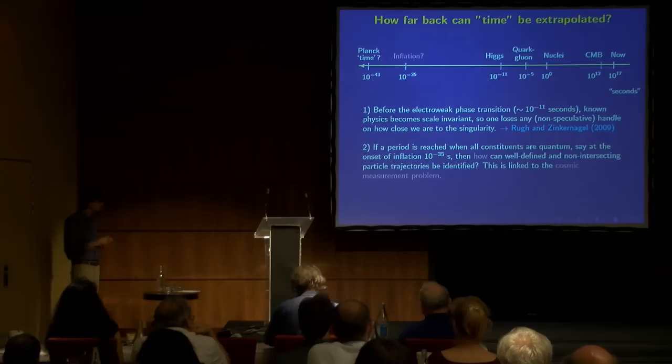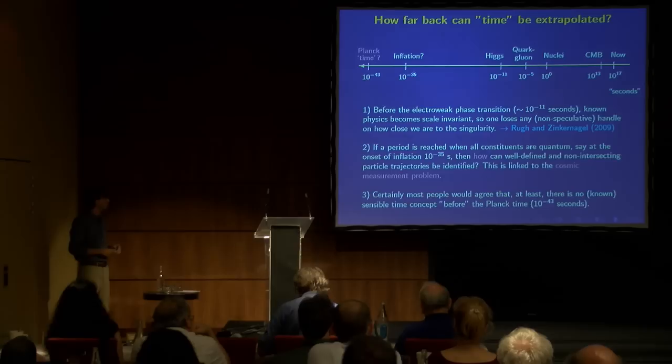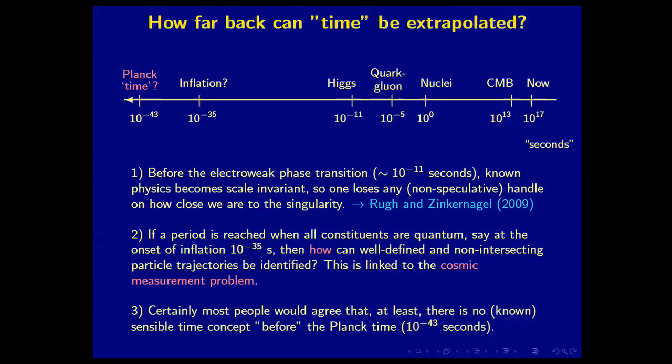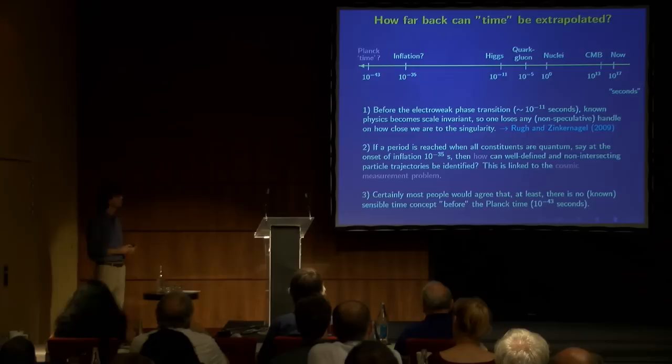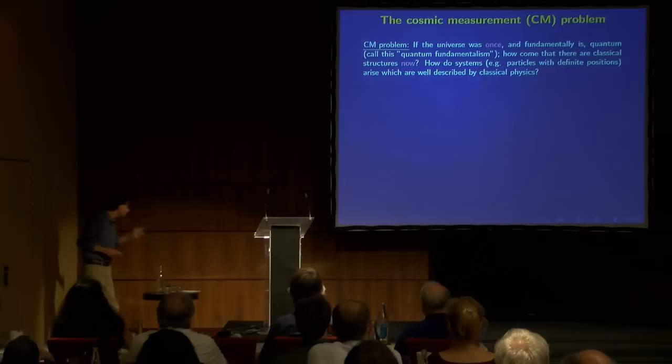Now, if a period is reached when all constituents are quantum, say at the onset of inflation, say 10 to the minus 35 seconds, then how can well-defined and non-intersecting particle trajectories be identified? And this is linked to what one could call the cosmic measurement problem, which we just heard a talk by Sudarsky about, in fact, about this problem. And finally, we may ask, okay, whatever you think of these two, certainly most people would agree that something strange happened, or at least there's no known sensible time concept before the Planck time, which is 10 to the minus 43 seconds. And there it seems then that we have some kind of limit to how far we can go back. That is, of course, including quantum mechanics. And if you don't, well, then you hit the singularity. Okay, so here are at least some things to worry about, some places where we might hit a temporal limit in our backwards extrapolation of time.